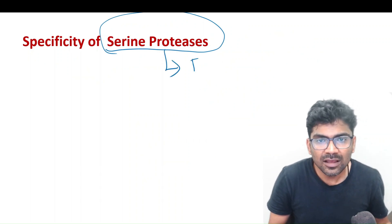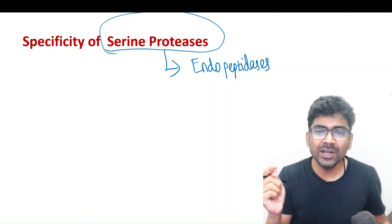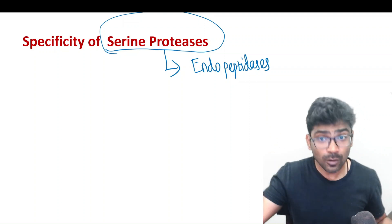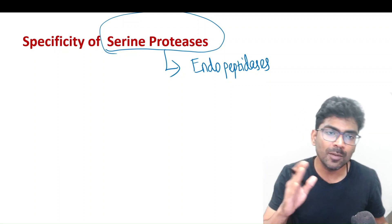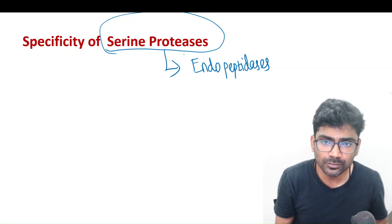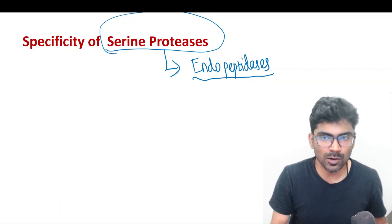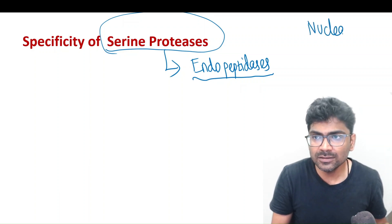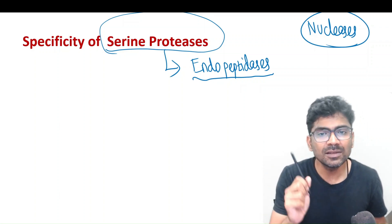These enzymes are endopeptidases. There are also exopeptidases — exopeptidases act on either the amino terminal or carboxy terminal. That is why exopeptidases can be classified into aminopeptidase and carboxypeptidase. Endopeptidases will cleave the internal peptide bonds. Do you remember, even in nucleases we have endonuclease and exonuclease — this is something similar to that.